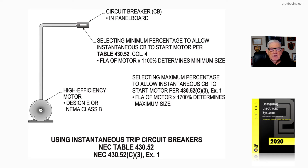If you don't use some kind of adjustable speed drive system, a solid-state starter to reduce the starting method, or some other known starter-reducing means, then you can go up to 1700% under conditions where you feel it's safe to protect the conductors, the motor windings, and similar components with overload protection — and to allow your device to be sized with a setting large enough to allow your motor to start, run, and accelerate the load.